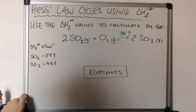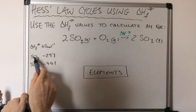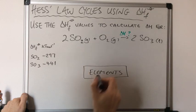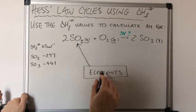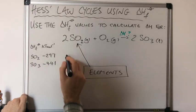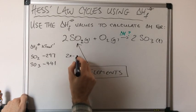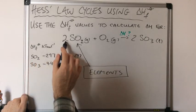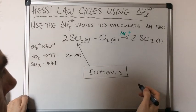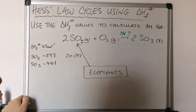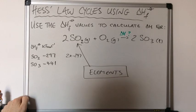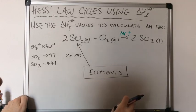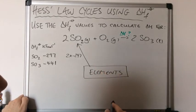Let's have a look at the cycle now. To form two moles of SO₂ from elements, we connect the elements box with the two SO₂'s — that's going to have an enthalpy change of two times minus 297 kJ/mol. Remember this value is per mole and we've got two moles, so that's why we need that factor of two. Oxygen is an element, and the enthalpy change of formation of all elements is zero — you'd be forming O₂ from O₂, so there's absolutely no change.